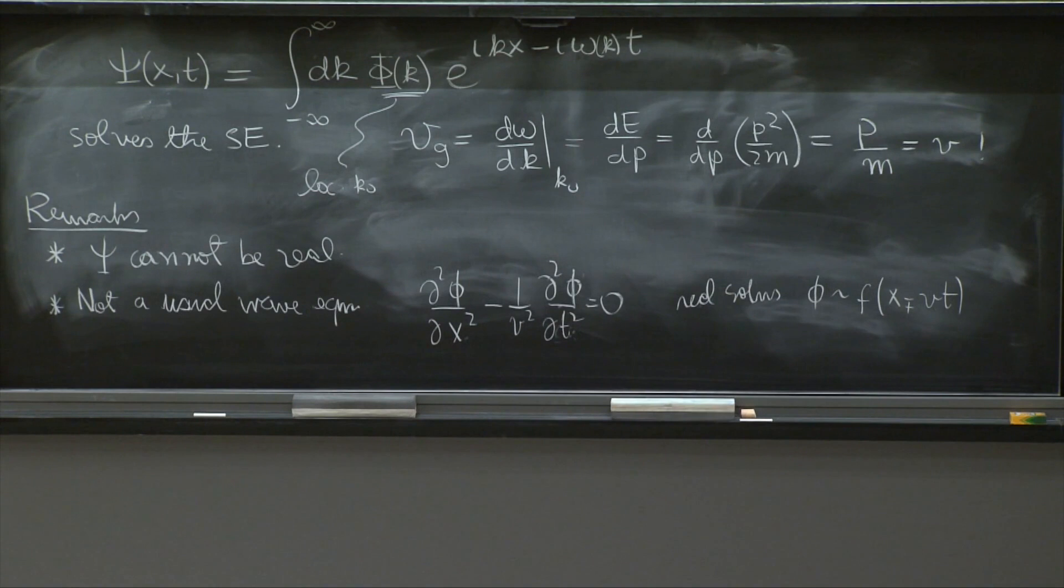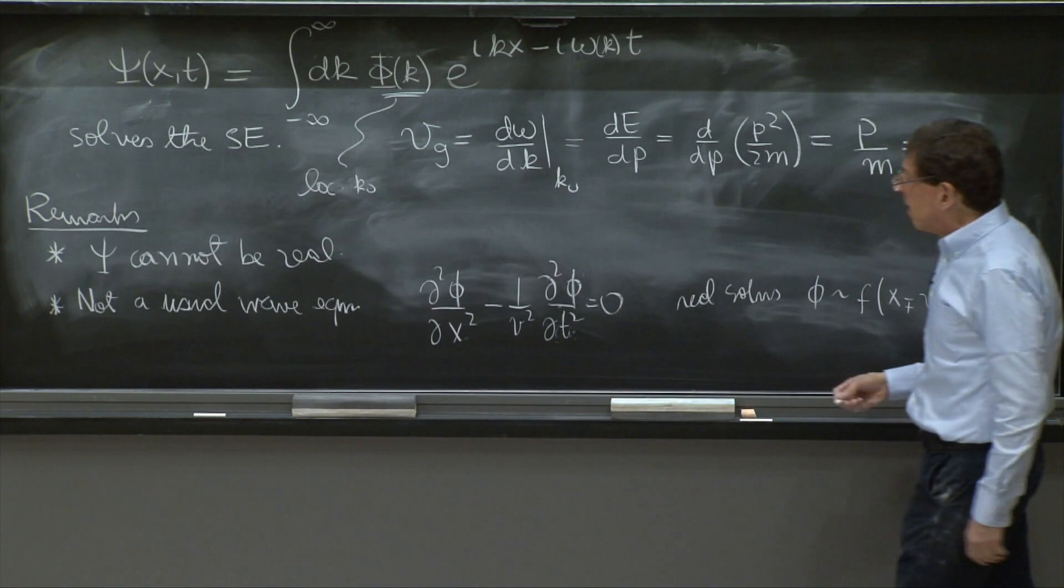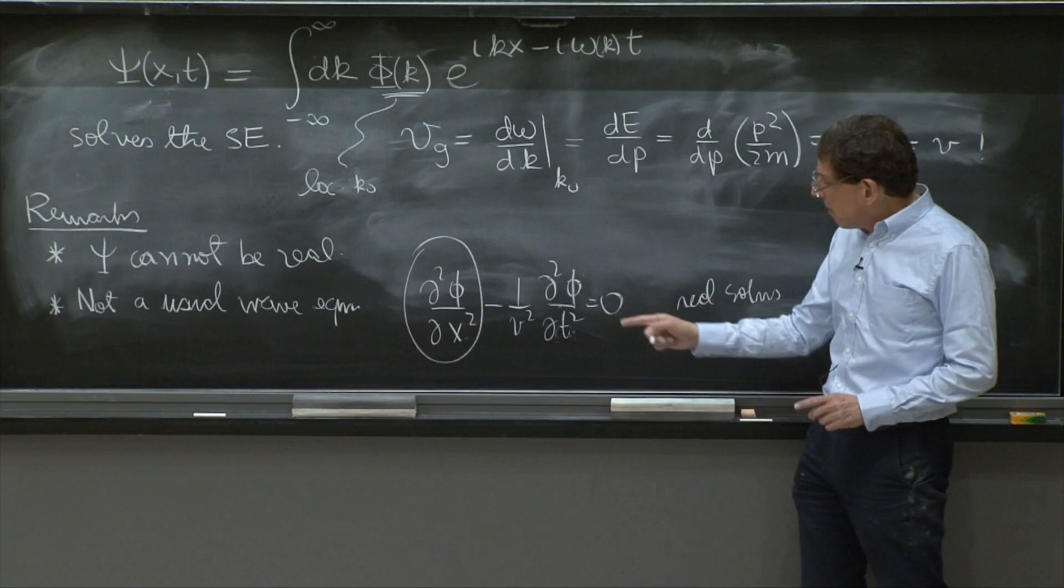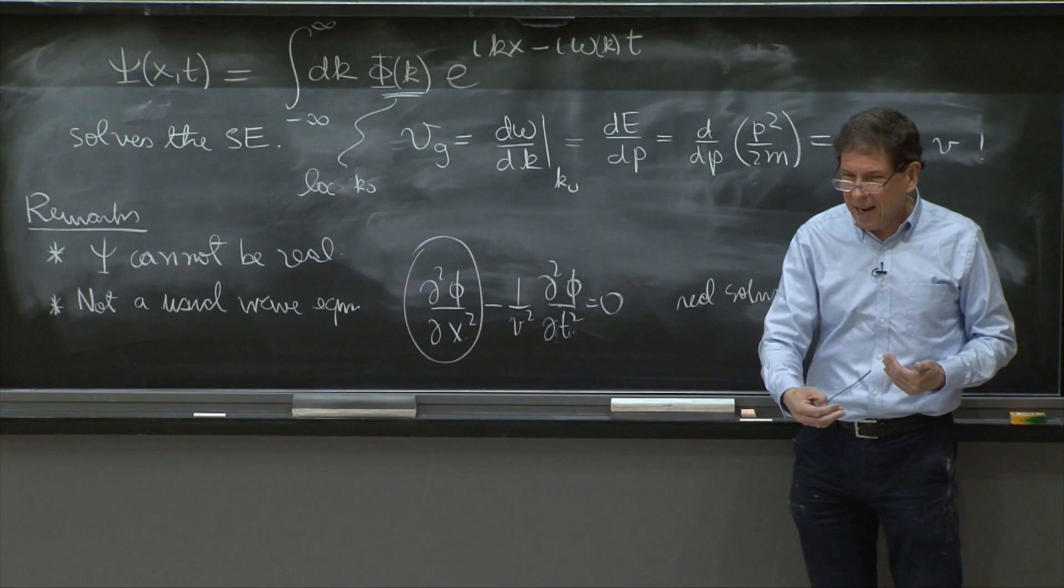It's a little bit different situation. And what has happened is that we still kept the second derivative with respect to x, but in time, we replaced it by a first derivative, and we put an i, and somehow it did the right job for us.